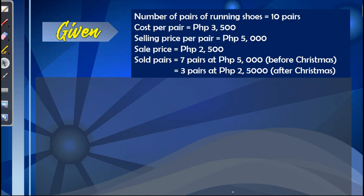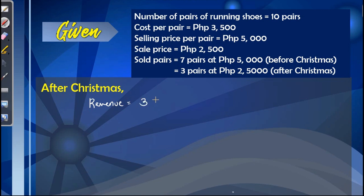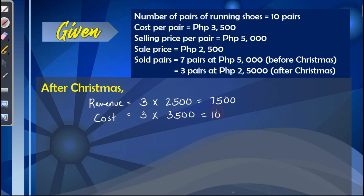Aside from the 7 pairs sold before Christmas, there are still 3 pairs remaining that were sold after Christmas. Using the same procedure: the revenue after Christmas is 3 pairs times the sale price of $2,500, giving a total of $7,500. The cost for those 3 pairs is 3 times $3,500, which equals $10,500.